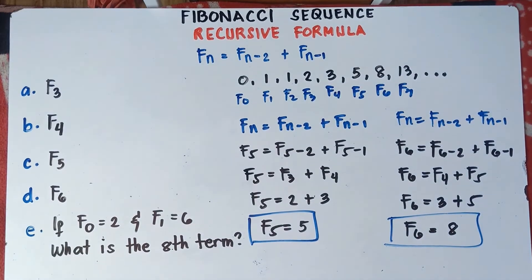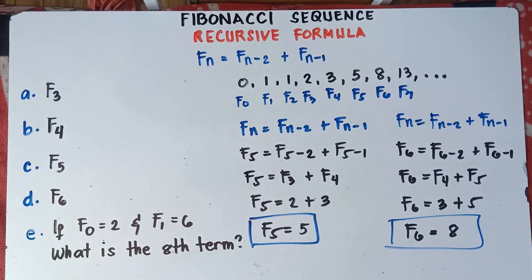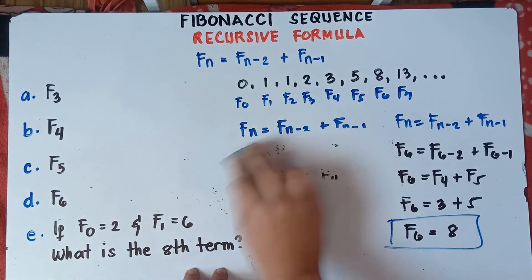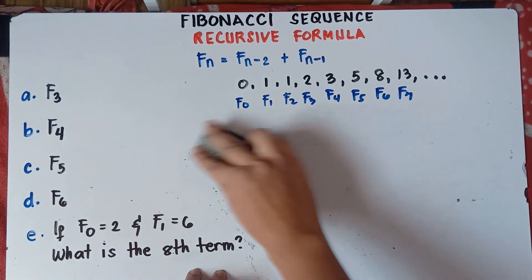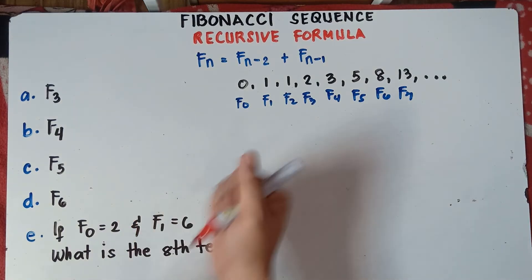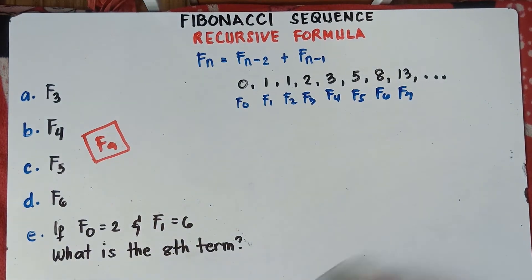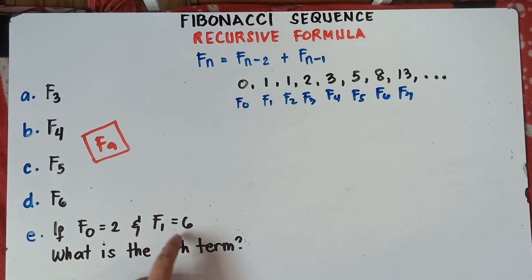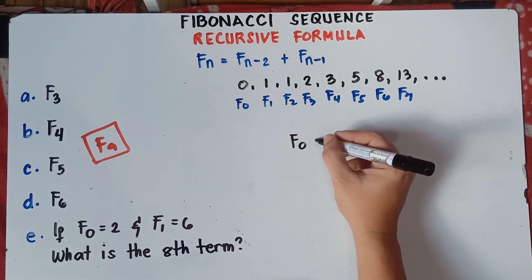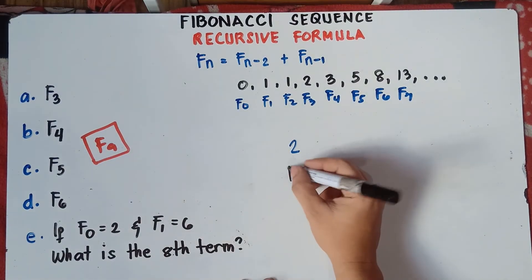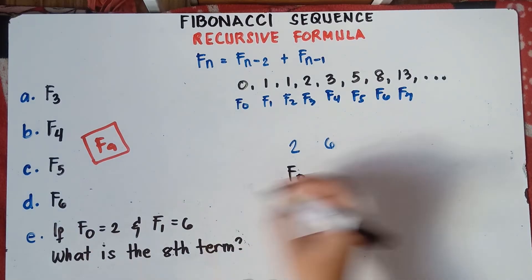Now let's try something tricky. If F sub 0 equals 2 and F sub 1 equals 6, what is the 8th term? After answering this one, you will also try finding F sub 9 on your own. So F sub 0 is 2 and F sub 1 is 6.